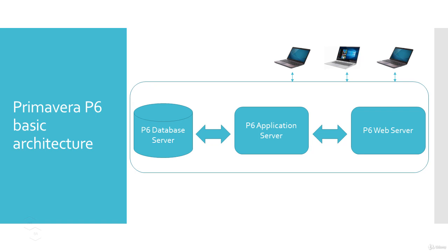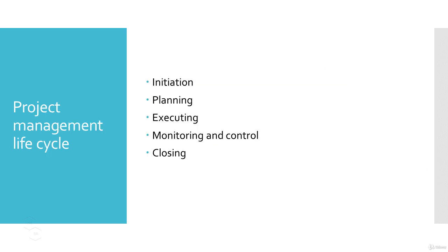Let's understand the project management lifecycle concept. Depending on the type and size of the project, a project can have several phases, and these phases can be grouped in many ways using different terminologies and methodology. One widely used and generally accepted categorization is from the PMI, or Project Management Institute: we can have five phases in any project — initiation, planning, executing, monitoring and control, and closing.